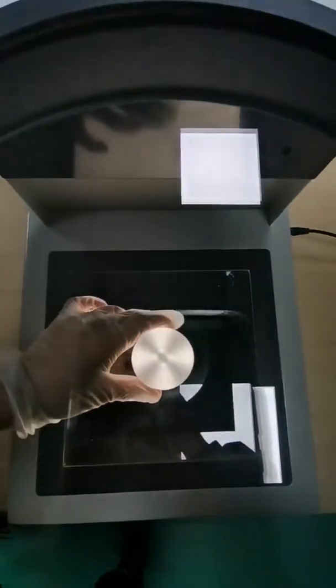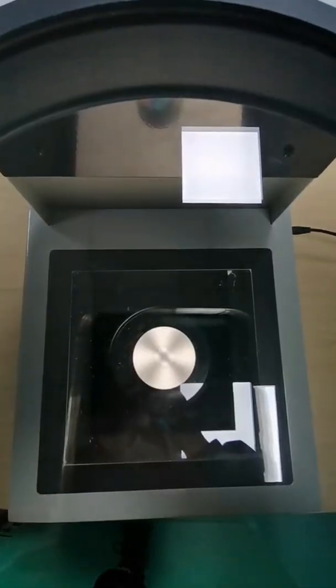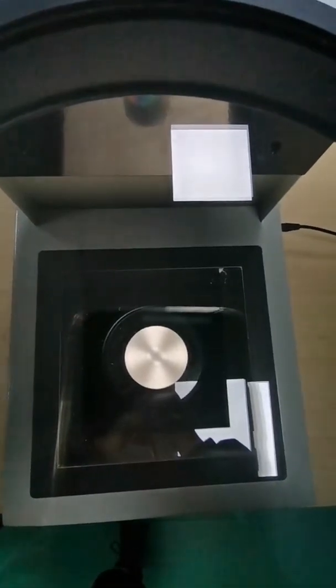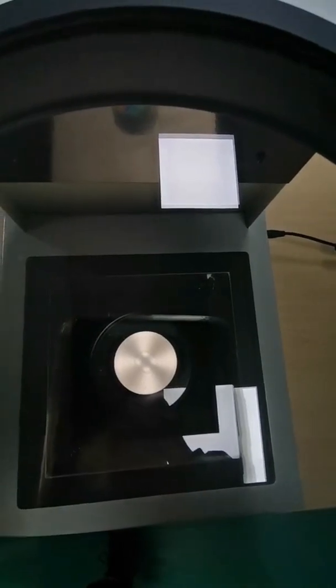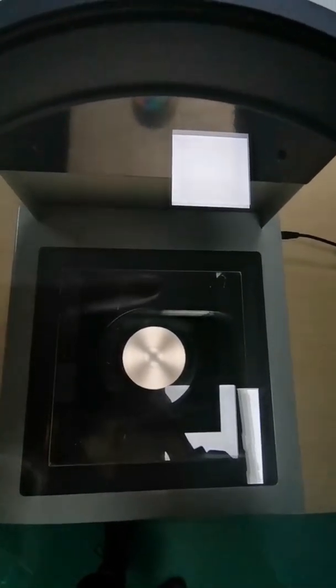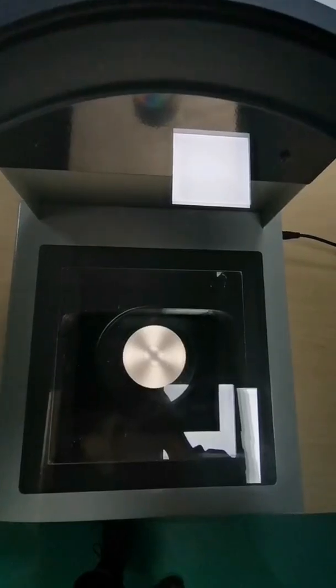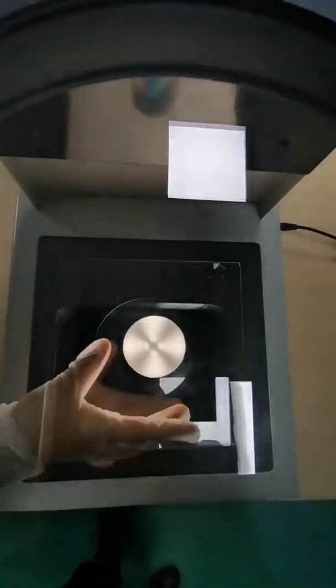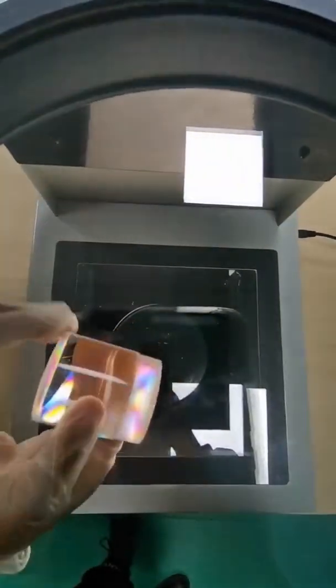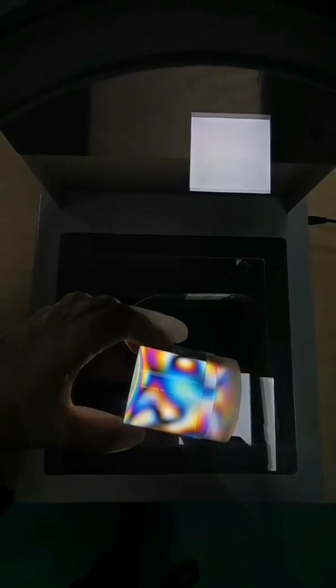By doing this experiment, we'd like to say that material transparency has some effects on our polariscope's testing performance. The ideal objects are 100% transparent. For an object that is not completely transparent, we'd better do some sample testing first. That's all for today's sharing.